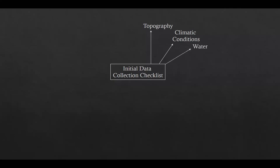The next item is water, both for drinking and processing purposes. It includes sources, availability, quantities, quality of the water, as well as sewage disposal. The next item is geological structures in the area influencing the mine and its surroundings. The next item is mine water as determined by exploration holes to estimate its depth, quantity and method of drainage. Next is surface, which includes vegetation, water bodies or any other surface features of the area.